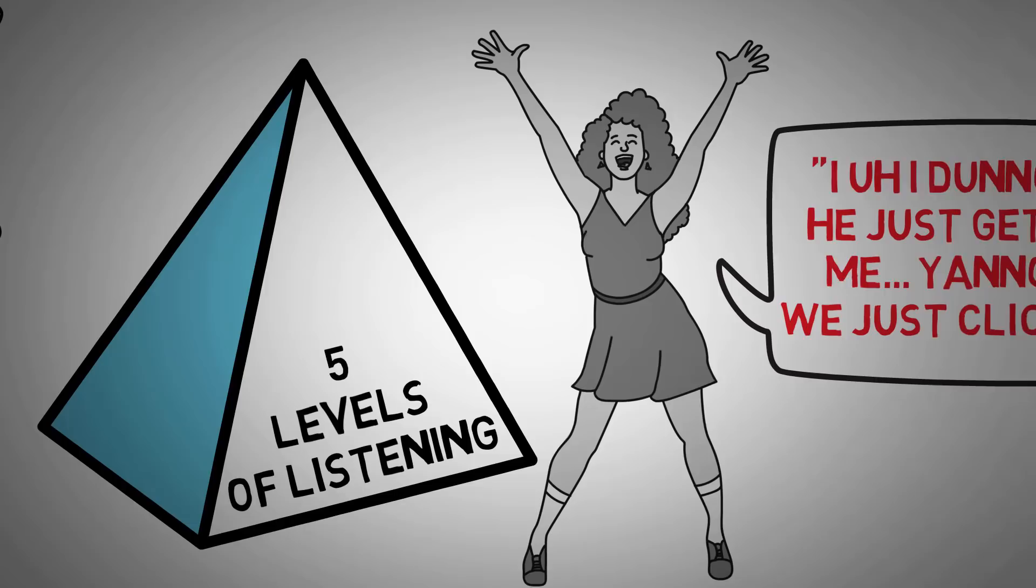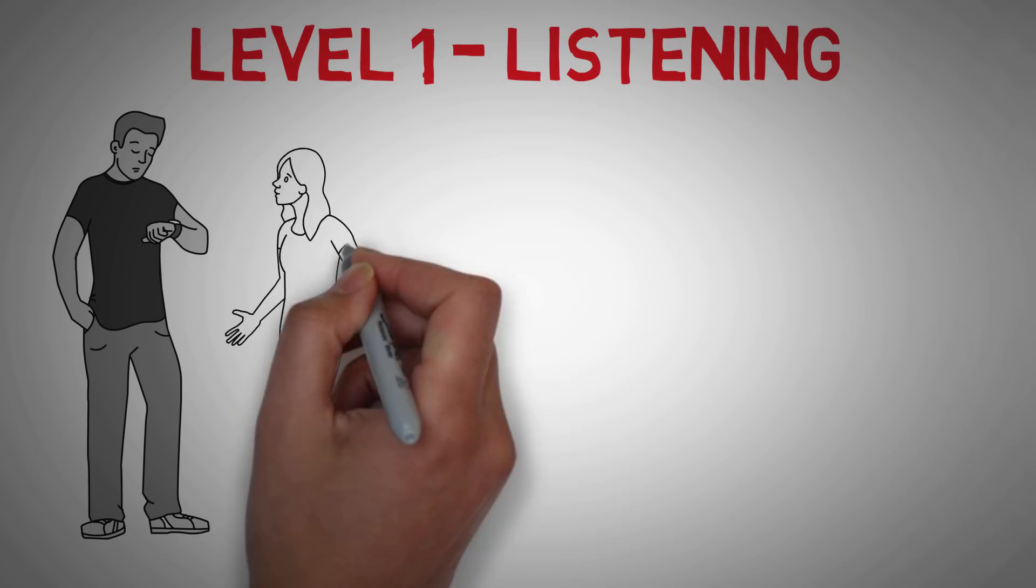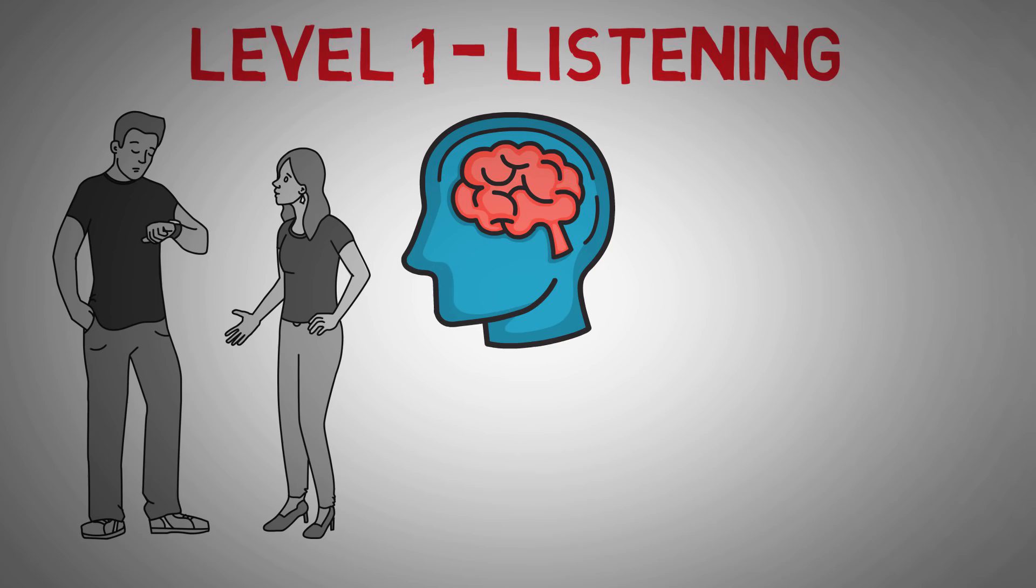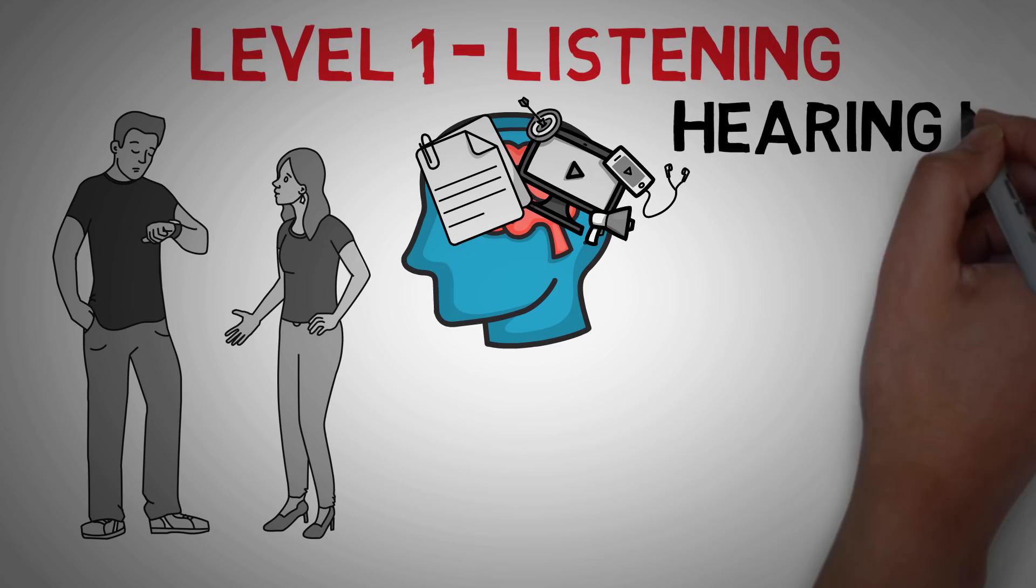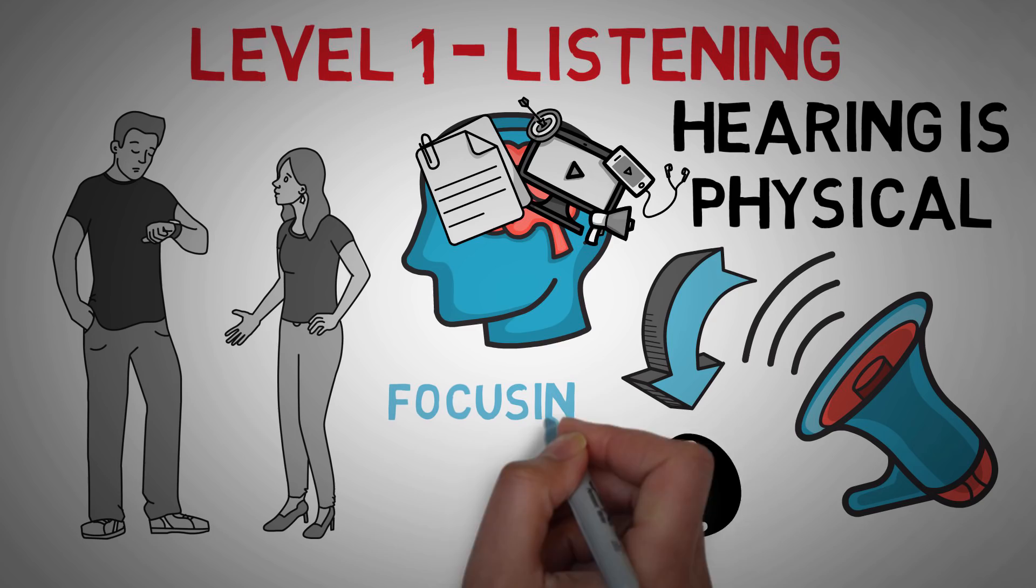So level one, the base, is called listening, and we all know what this is. They are talking and you're hearing them, kind of like the physical noise that comes from background music, or when you put on Futurama and try to write a script for your next YouTube video. But you're not consciously selecting to keep your attention on what they are saying. Remember that hearing is a physical thing. You can hear the physical sound waves, but listening is turning those sound waves into information that you can use.